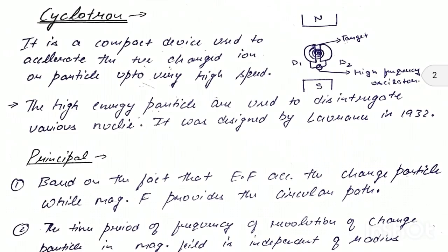The cyclotron has two D-shaped chambers (dees) connected to an AC source. The positive charge particle is placed at the center, face to face between the two dees. When the two dees are connected to the AC source, the electric field accelerates the charge particle and the magnetic field provides circular motion, so the particle starts moving.